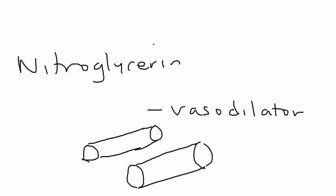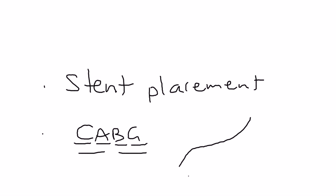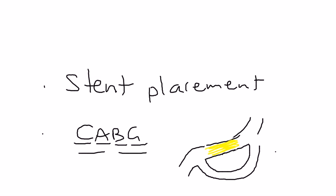There are also other medications, but those are by far the most important. The two surgical treatments are stent placement, which we already discussed, and CABG — coronary artery bypass graft. Sometimes you have so much atherosclerosis that you can't even place a stent. In that case, a bypass graft is performed, routing blood flow around the blocked area. It's a very elaborate surgery, but very important.